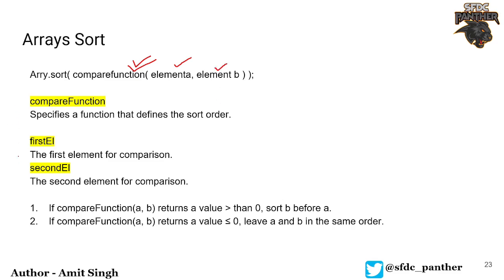To sort arrays, the sort method accepts one optional parameter which is a compare function. It takes two parameters, element a and element b. This compare function specifies in which order you want to sort your array. If the compare function returns a value greater than zero, element b goes before element a. If it returns less than or equal to zero, a and b remain in the same order.